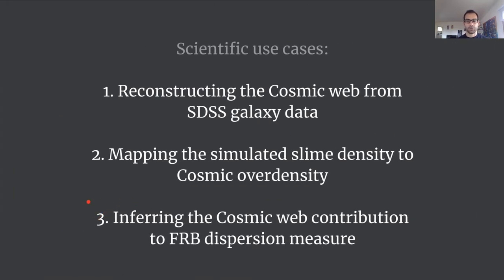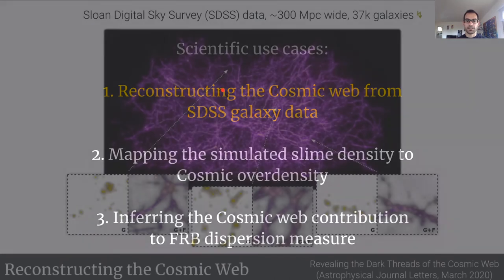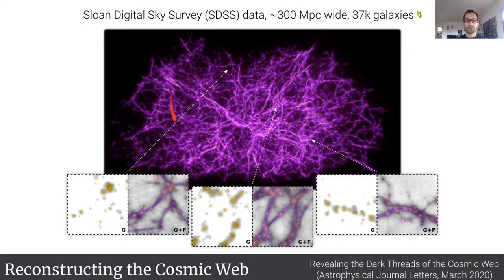Now there are three scientific use cases which we use Polyform for. First of them is the reconstruction of the cosmic web from the galaxy data itself. Here we obtained the first full three-dimensional density map, a density field if you will, that actually is a dense reconstruction of the cosmic web from this galaxy data. You can see in these zoom-ins that the individual galaxies represented as yellow blobs are quite meaningfully interconnected by the slime mold.